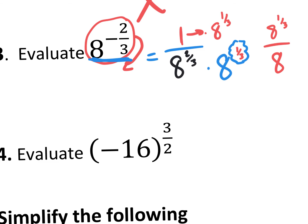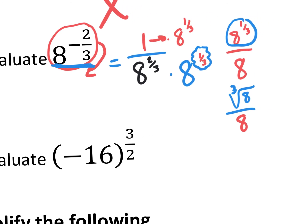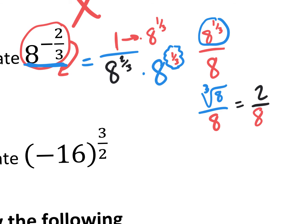Is there anything else we can do? Yes — eight to the one-third is the third root of eight, which is two, so we have two over eight. The final answer is one-fourth.